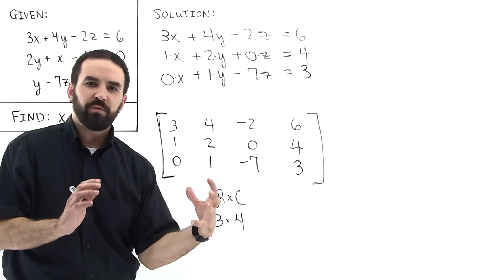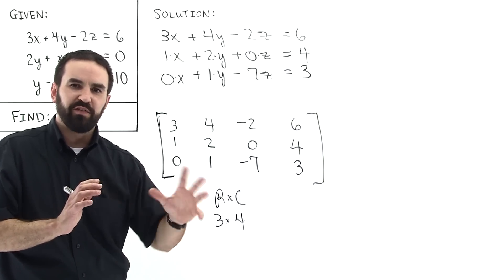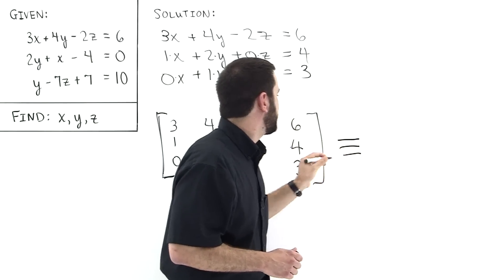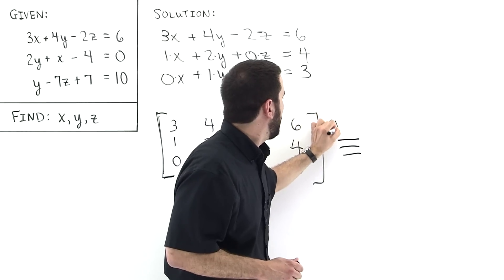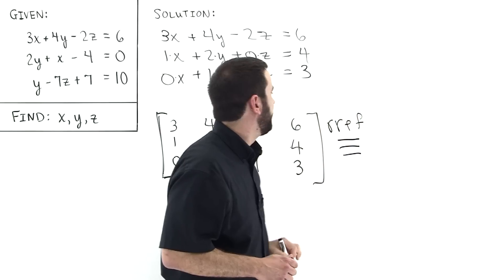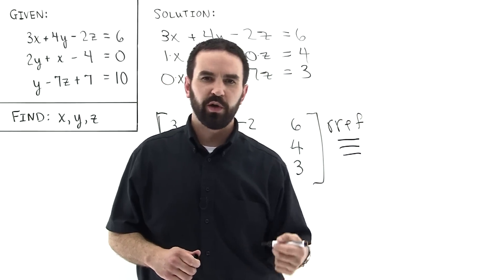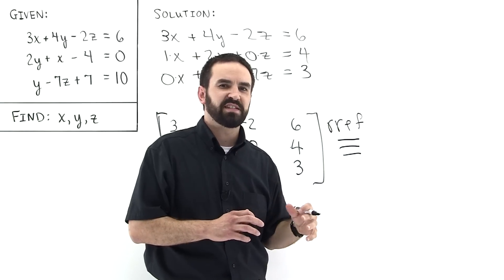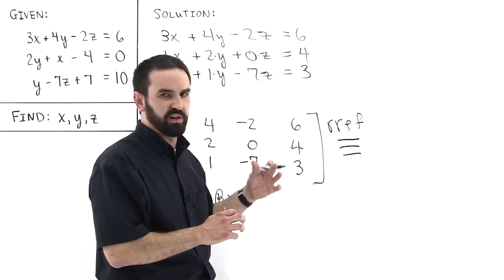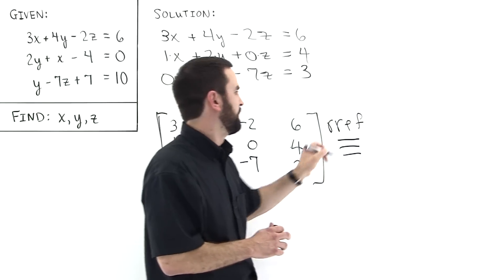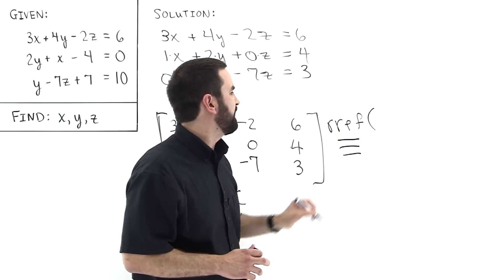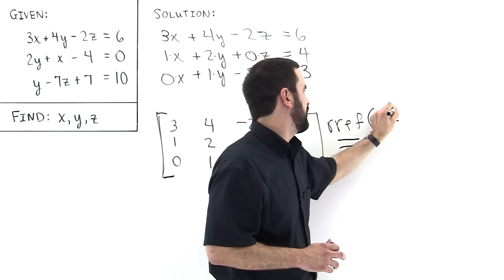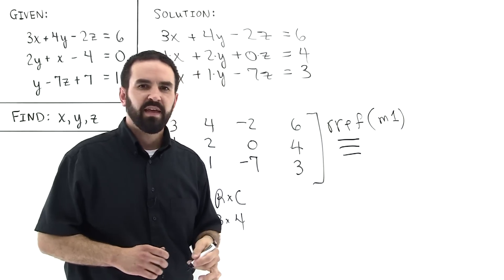Once you have your matrix with all the values input, you go back to the home screen. And you type in RREF, which stands for Reduced Row Echelon Form. We're going to learn what's going on behind the scenes in just a moment, but first we'll use the calculator to solve the system. Type RREF, open parentheses, and then whatever the name of your matrix is — I call mine M1 — and then hit Enter.